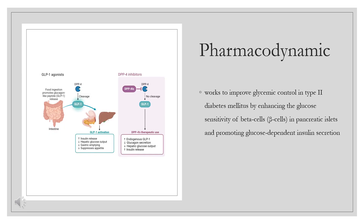Pharmacodynamics: Vildagliptin works to improve glycemic control in type 2 diabetes mellitus by enhancing the glucose sensitivity of beta cells in pancreatic islets and promoting glucose-dependent insulin secretion. Increased GLP-1 levels lead to enhanced sensitivity of alpha cells to glucose, promoting glucagon secretion. Vildagliptin causes an increase in the insulin-to-glucagon ratio by increasing incretin hormone levels; this results in a decrease in fasting and postprandial hepatic glucose production. Vildagliptin does not affect gastric emptying, and has no effects on insulin secretion or blood glucose levels in individuals with normal glycemic control.